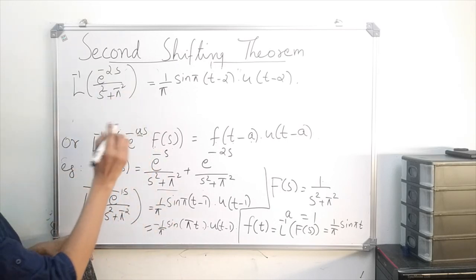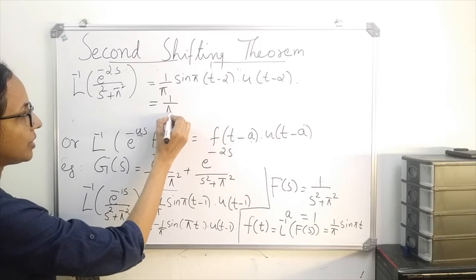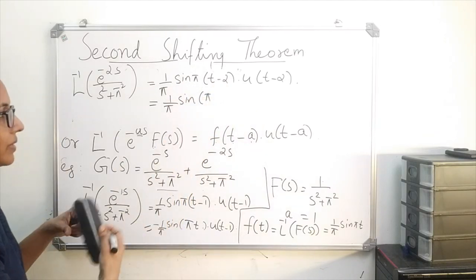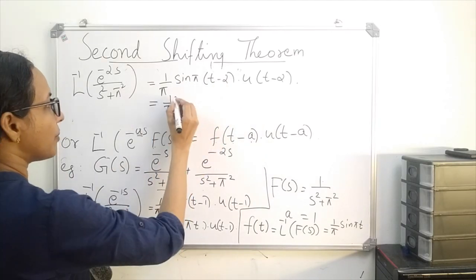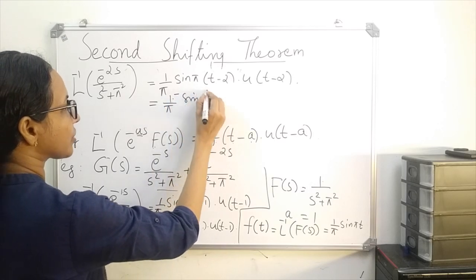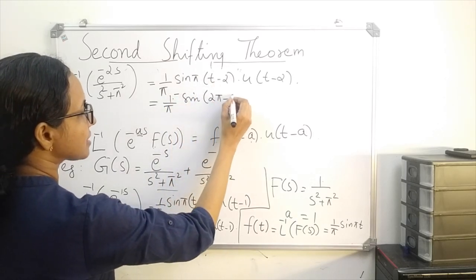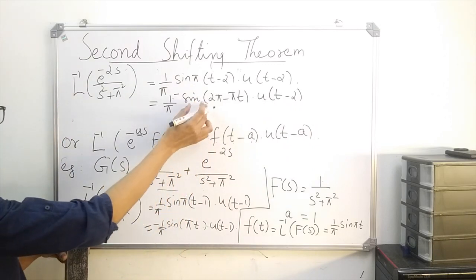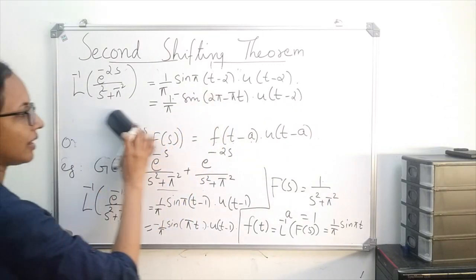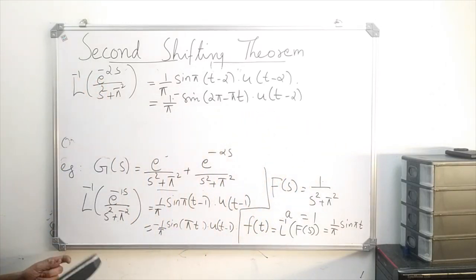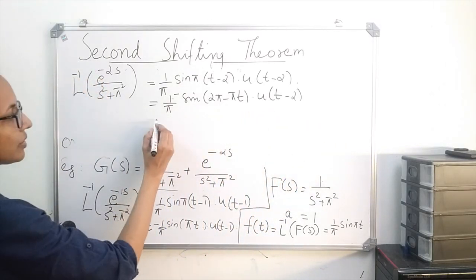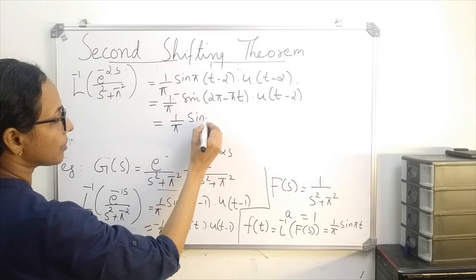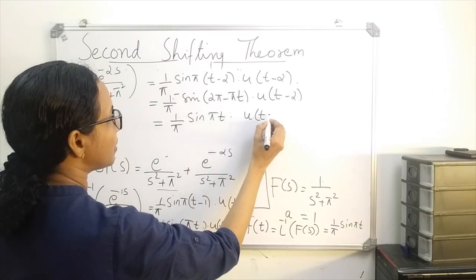Coming back to the second term, 1 over pi times sin of pi(t minus 2) can be written as 1 over pi times sin of pi t minus 2pi. This is of the form sin(360° minus theta), and since sin(360° minus theta) equals minus sin theta, this becomes 1 over pi times sin of pi t times u of t minus 2.